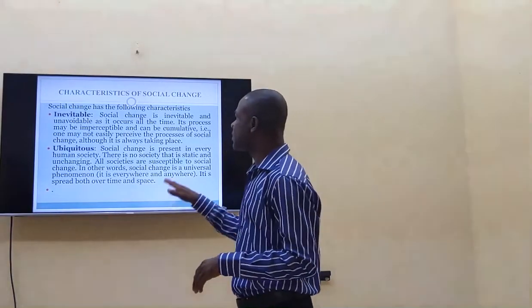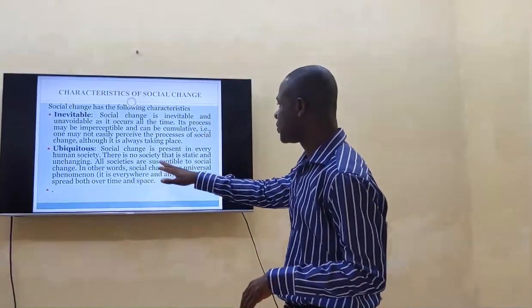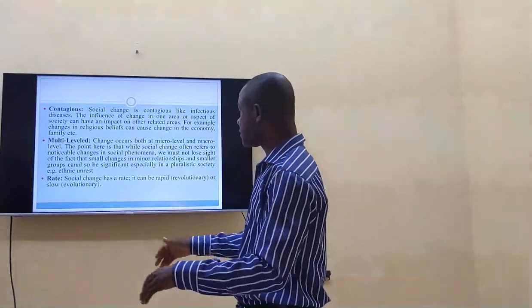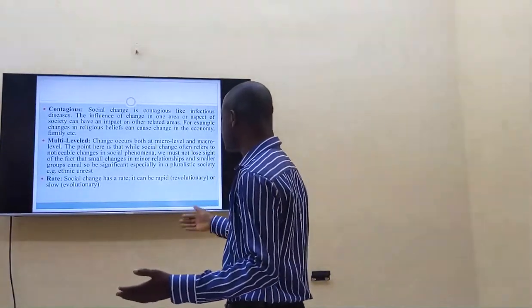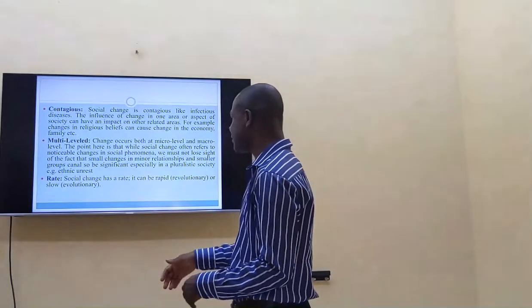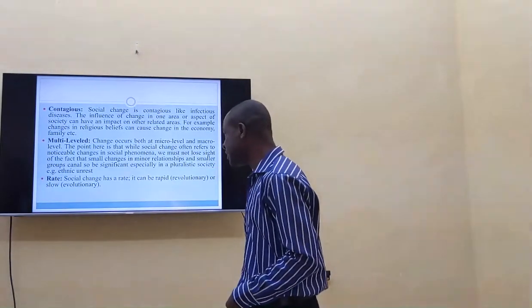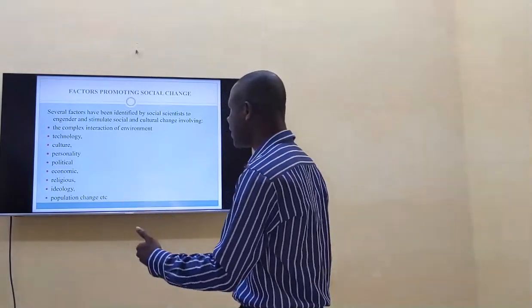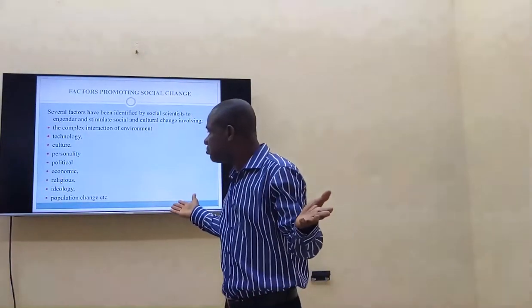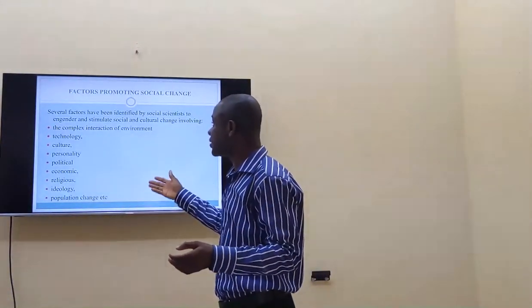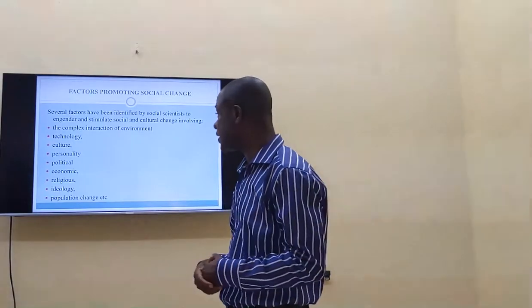Characteristics of social change: social change is inevitable and universal — it must definitely happen. It is contagious — social change is like a disease; once it starts, it affects others. It is multilevel — social change is not limited to one place; it continues and spreads. It is always rapid and fast. Factors that promote or influence social change include: technology, complex interaction of environment, culture, personality, political factors, economic factors, religious factors, ideology, and political change.